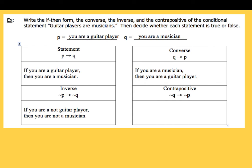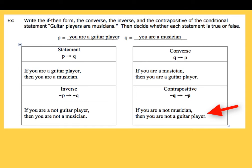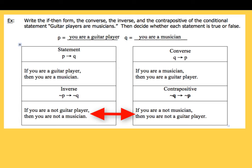For the contrapositive, we negate q and p in the order from the converse: if you are not a musician, then you are not a guitar player. Some people get to the contrapositive by taking the converse of the inverse — that gives you the same statement as well: if you're not a musician, then you are not a guitar player.